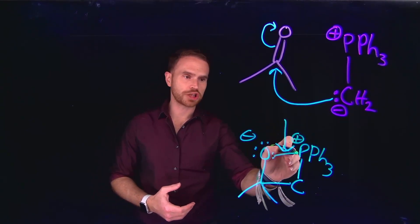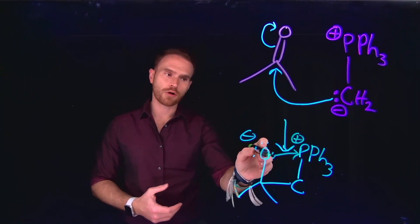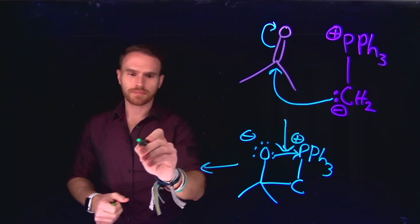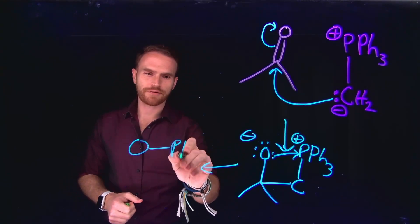And these three lone pairs are going to be attracted to the positive charge that is built up on phosphorus. So therefore, we will generate an interaction between these, where the lone pair will attack the phosphorus electrophile.